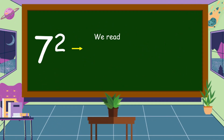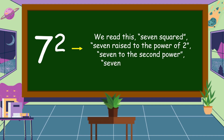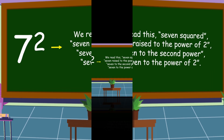We read this as 7 squared, 7 raised to the power of 2, 7 to the second power, or 7 to the power of 2.